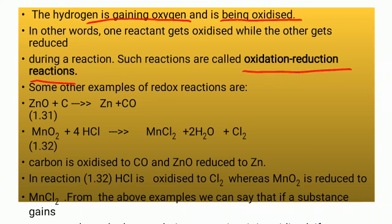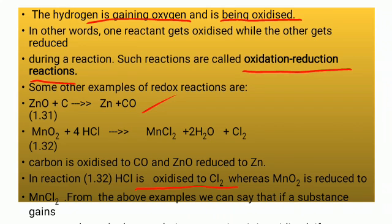Other examples: ZnO + C → Zn + CO, where ZnO is reduced and carbon is oxidized. Also, MnO₂ + 4HCl → MnCl₂ + 2H₂O + Cl₂. In this reaction, HCl is oxidized to Cl₂, whereas MnO₂ is reduced to MnCl₂.